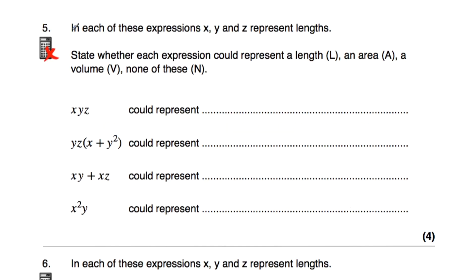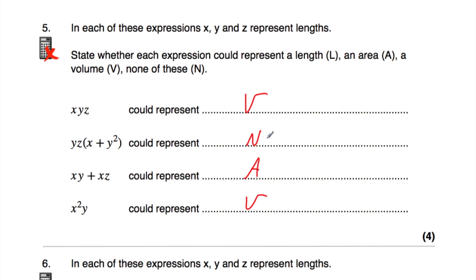In question number five, X, Y, and Z represent lengths. XYZ — a length times a length times a length — is a volume. YZ(X+Y²): Y² is a length times a length, which is an area, and X is a length; a length plus an area is inconsistent, so the whole expression is none of these. XY+XZ: XY is a length times a length, an area; XZ is also an area; an area plus an area is a bigger area, so that's an area. X²Y: X² is an area times Y, which is a length — an area times a length is a volume.